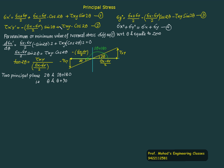The same result can be obtained from equation 2 by substituting tau x dash y dash equals 0. Setting shear stress to zero gives: 0 equals minus sigma x minus sigma y by 2 into sin 2 theta plus tau x y into cos 2 theta. This equation is identical to the one obtained by differentiating sigma x dash. Therefore, the principal plane — on which stress is maximum or minimum — is the same plane on which shear stress is zero.